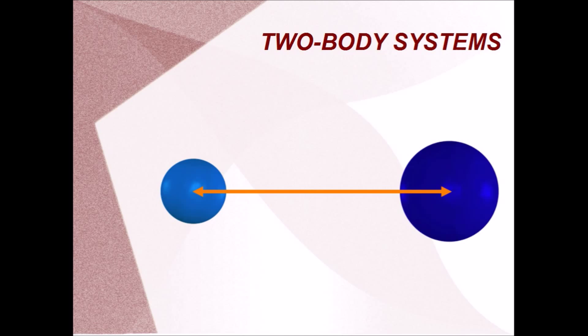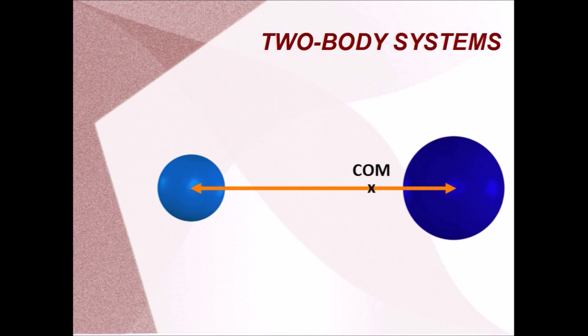Say we have two spheres, some distance apart. The right sphere is much heavier than the left one, by which I mean it has more mass. Would you expect the common center of mass to be halfway between them? Or would it be offset to one side? Well, it's closer to the right sphere, and that makes sense.